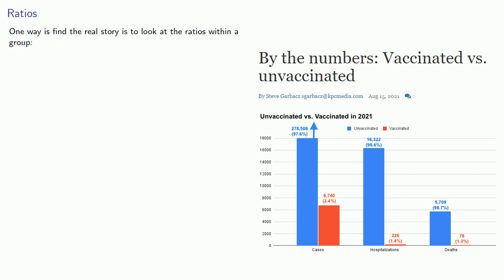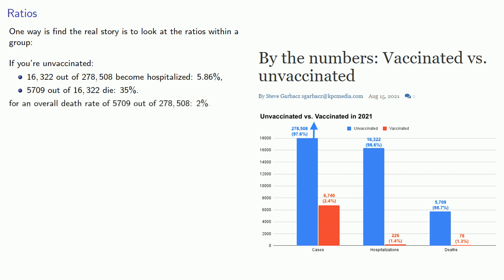One way to find the real story is to look at the ratios within a group. So our data shows that if you're unvaccinated, 16,322 out of 278,508 become hospitalized. That's 5.86%. And 5,079 out of those 16,322 die, that's 35%, for an overall death rate of 2%.